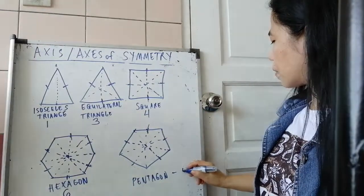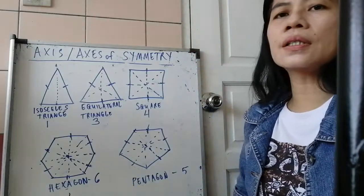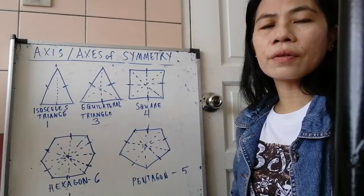Okay, so there you have it. It has five lines of symmetry, and then for the hexagon is six lines of symmetry.